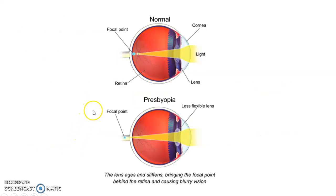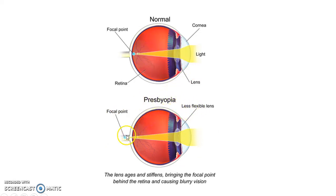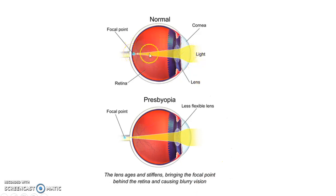This picture depicts presbyopia. This is a normal eye and this is a presbyopic eye. In presbyopia, the lens is less flexible so the focal point is behind the retina. The lens ages and stiffens, bringing the focal point behind the retina and causing blurry vision. Normally, the focal point is on the retina because the lens is usually flexible.